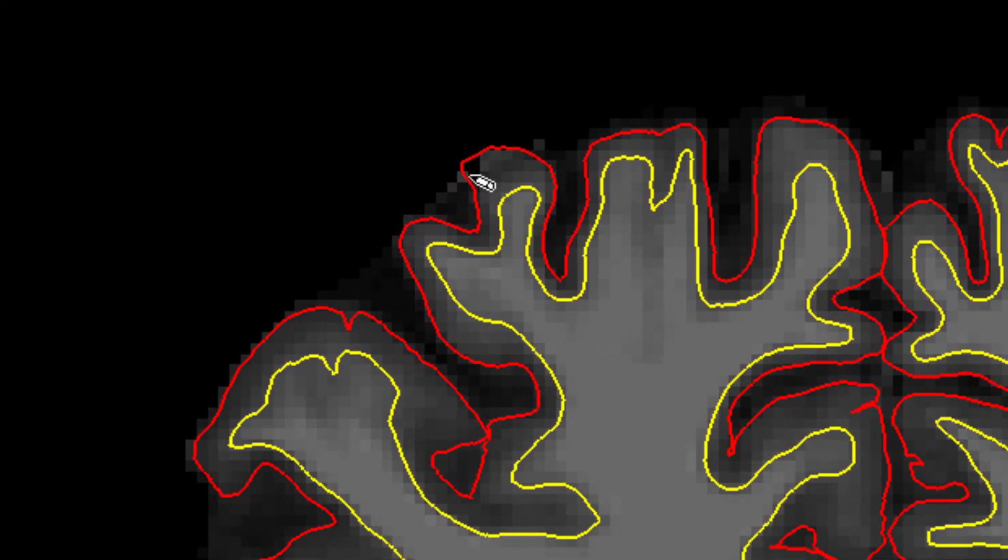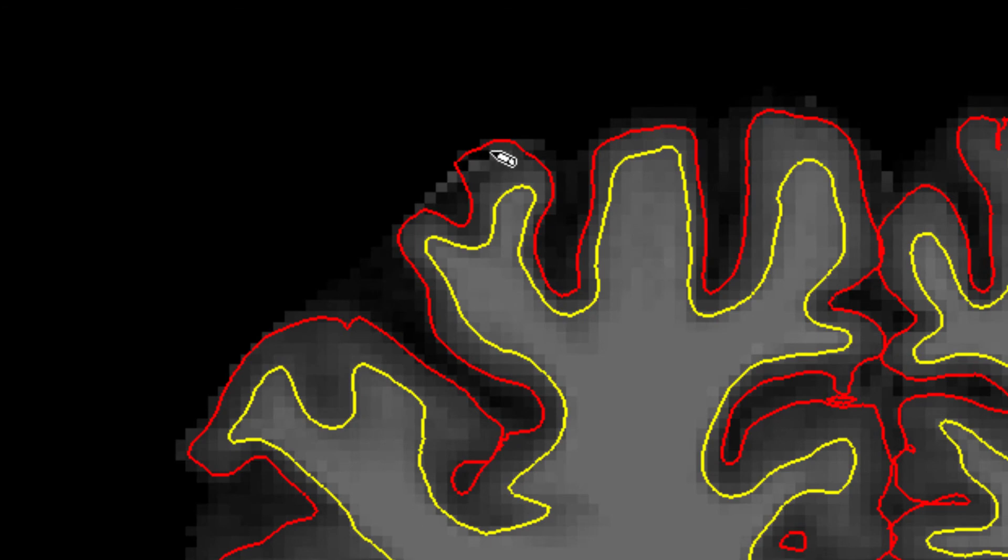Erase those voxels which seem to be part of the dura. Again, be conservative and take care not to erase cortex.